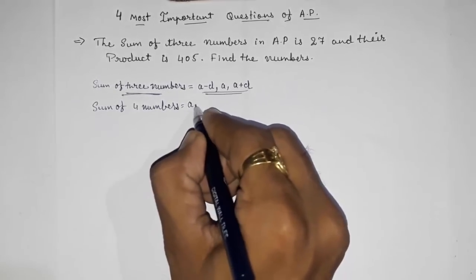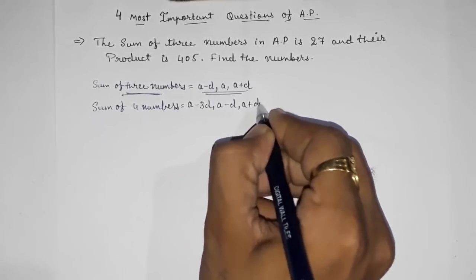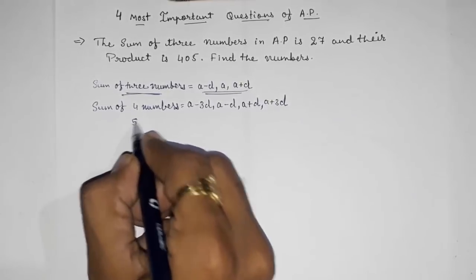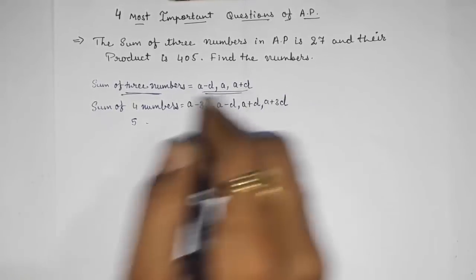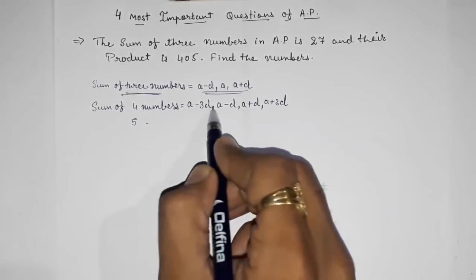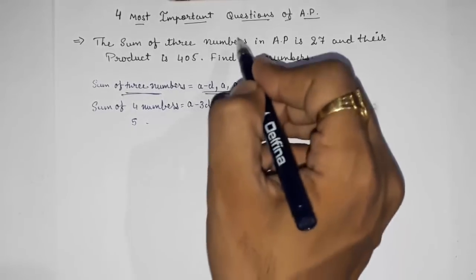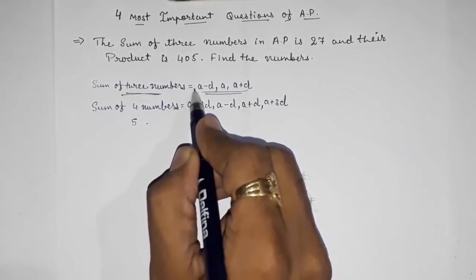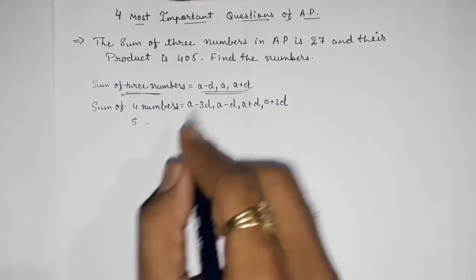When sum of four numbers is given, we suppose them as A minus 3D, A minus D, A plus D, and A plus 3D. When sum of five numbers is given, we add A minus 2D, A minus D, A, A plus D, and A plus 2D. When odd numbers are there we suppose directly, but when even numbers are there we skip the middle and suppose differently. This way you have to carry on.